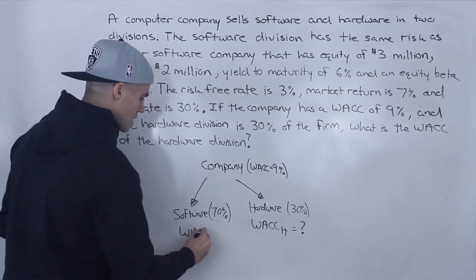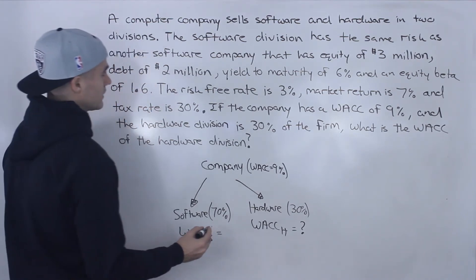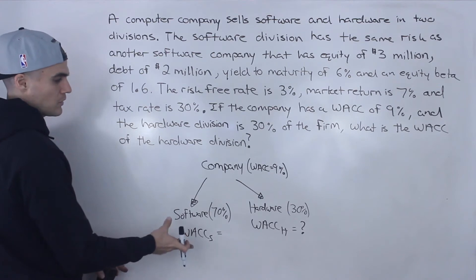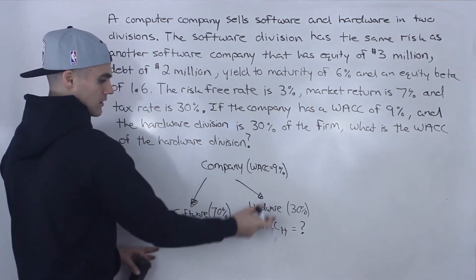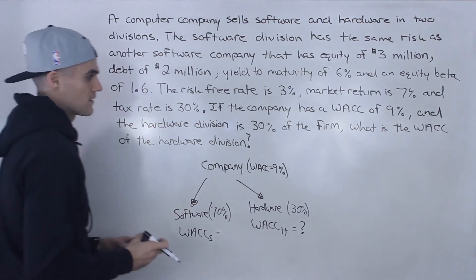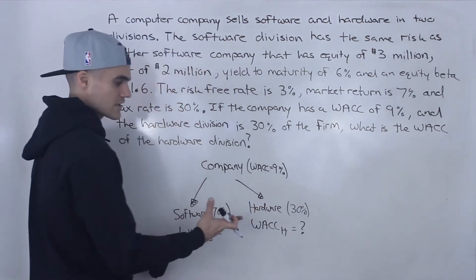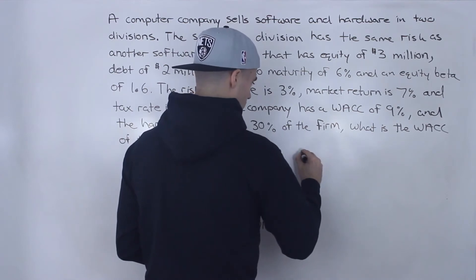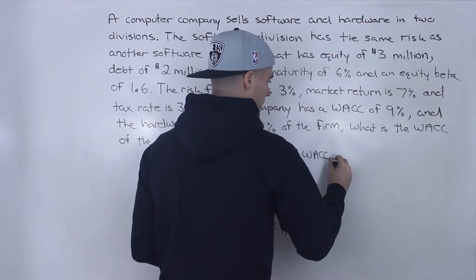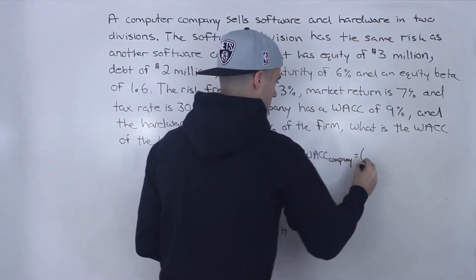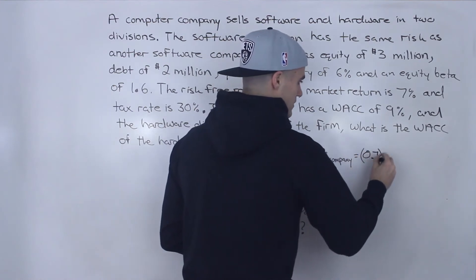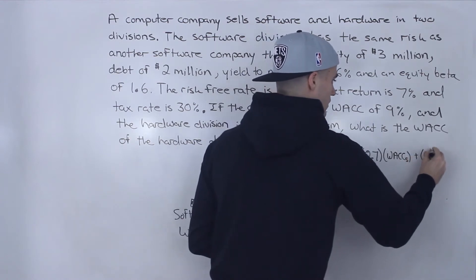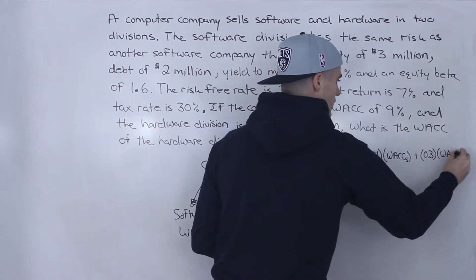The WACC for the software division is not directly given, but we have enough information to figure it out. How can we relate the WACC of the company to the WACCs of the two separate divisions? We can take a weighted average of the two divisions' WACCs. So: WACC_company = 0.7 × WACC_software + 0.3 × WACC_hardware.